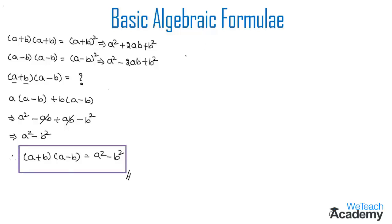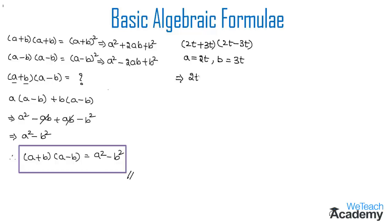Now let us solve a simple example. We have (2t + 3t)(2t − 3t). We observe that this is in the form of (a + b)(a − b), so by comparing we get a = 2t and b = 3t. Writing this in the form a squared minus b squared, we get (2t) whole squared minus (3t) whole squared, which gives 4t squared minus 9t squared.